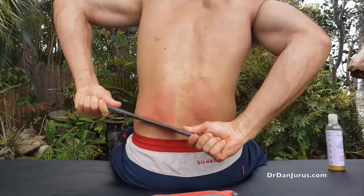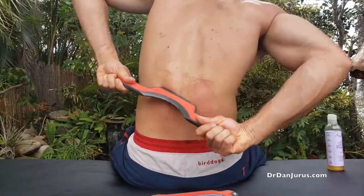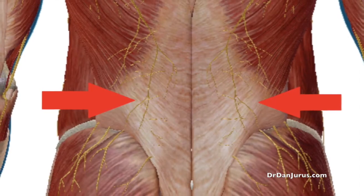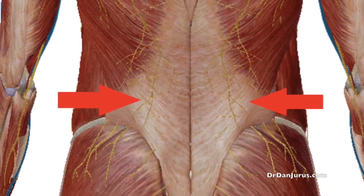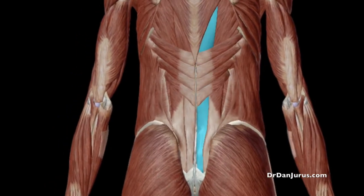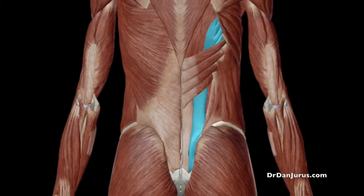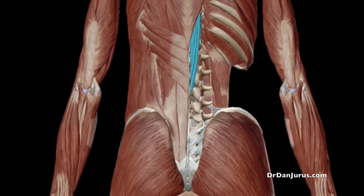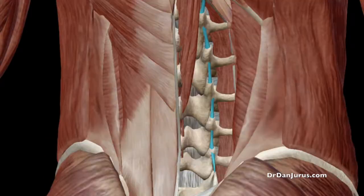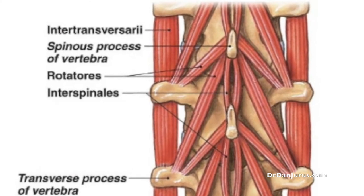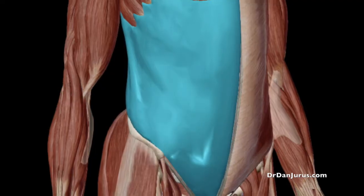Let's begin by talking about the anatomy of your condition. The lower back contains many muscles. From posterior to anterior, we have the thoracolumbar fascia of the latissimus dorsi muscle, serratus posterior inferior, longissimus thoracis, iliocostalis lumborum, multifidi, spinalis thoracis, intertransversary lateralis and medialis, interspinus, and rotator longus and rotator brevis muscles.